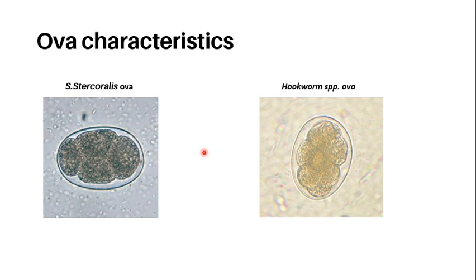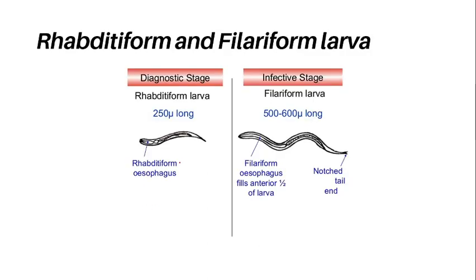Now let's describe the ova of this parasite. Strongyloides ova is oval in shape and possesses a clear and thin shell, which closely resembles the ova of the hookworm but are much smaller. These eggs hatch and release the rhabditiform larva of this parasite, which can either mature into the free-living adult or into the filariform larva, which is the infective stage of this parasite.